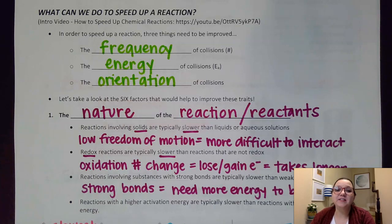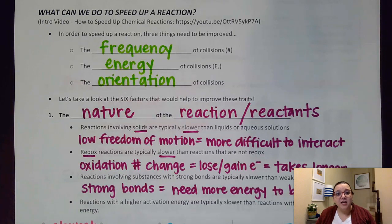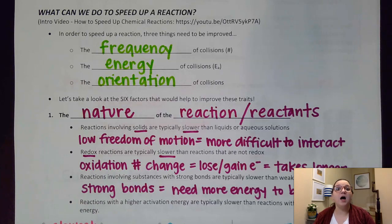Hey guys, Ms. Morusik here, and in this video we're going to talk about what we can do to speed up a chemical reaction. Hopefully you watched the fun little video I linked in my playlist about how to get a date in chemistry. I know it's kind of silly, but I think it does a great job of giving us an analogy to visualize what these changes can do to impact the rate of a chemical reaction. We're going to talk about all of those factors in this video, going into the detail behind them, but also I'm going to talk about a few things that the video didn't mention as far as other things that could impact the rate of a reaction.